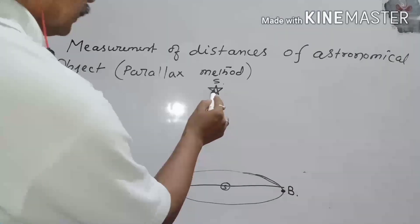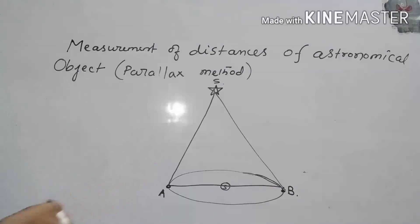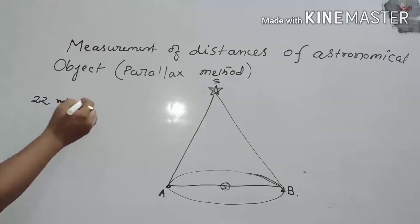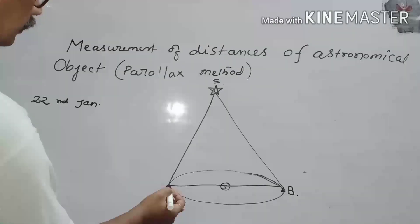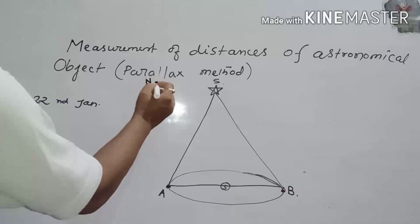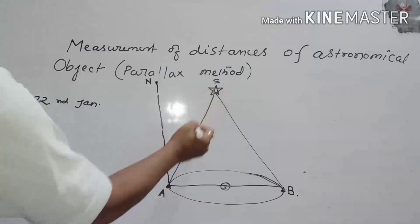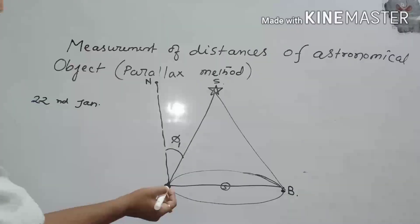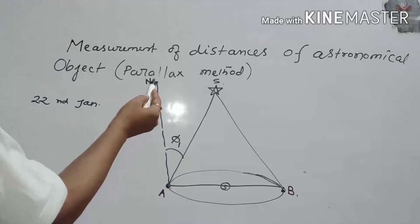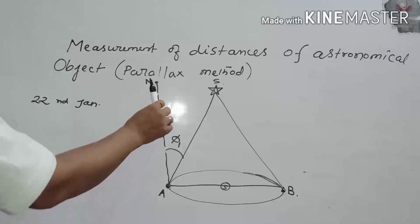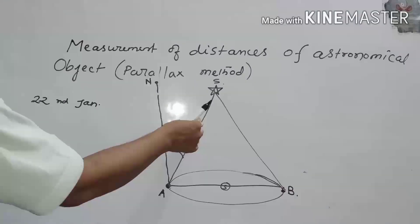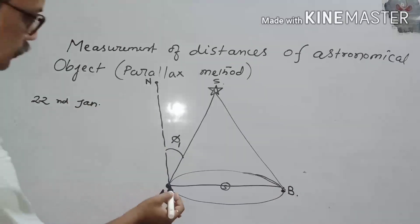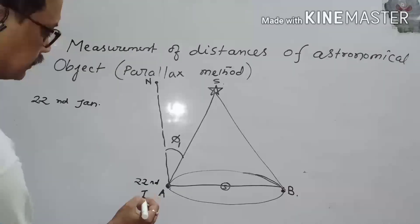Join S with A and S with B. First, suppose on a particular day — say 22nd January — we fix the astronomical telescope at point A. We focus a distant star N and with respect to this star N, we measure the angle between the direction of N and S at point A. Let this angle be phi 1.